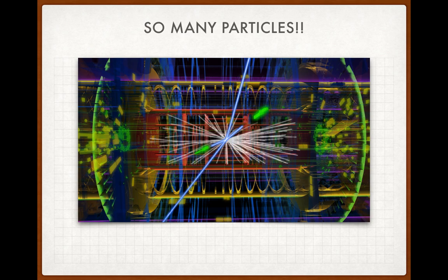The image here shows particles after being created in a collision. The large parallel lines in a yellowy colour are the pipe in the particle accelerator. The parallel red lines inside are the tunnel through which particles are accelerated. Then we have a lot of white lines, some with blue lines on the edge, and some green features — all representing different particles created post-collision in a particle accelerator.